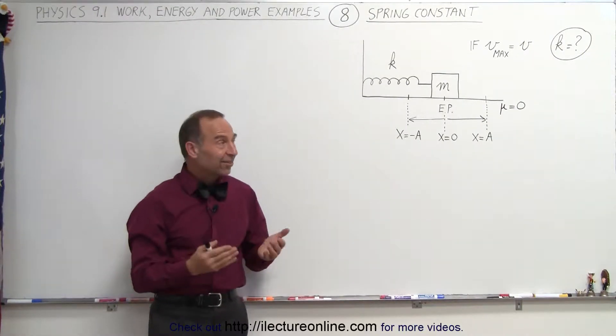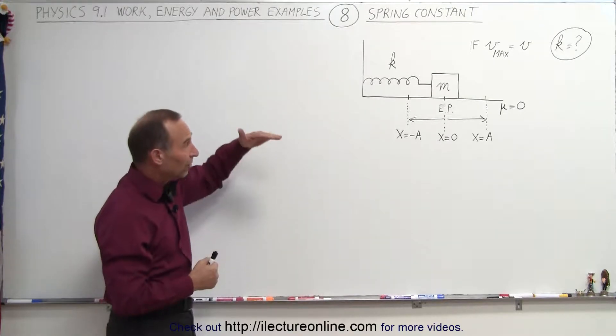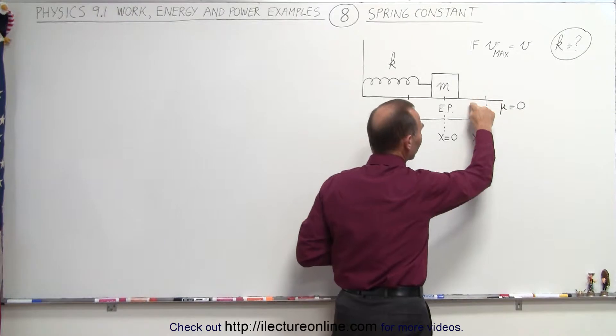Welcome to ElectronLine. In this example we have a mass attached to a spring. The mass is on a horizontal surface and we can assume that there's no friction between the mass and the surface.